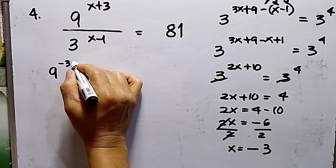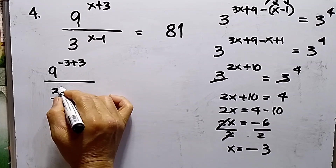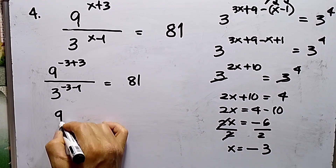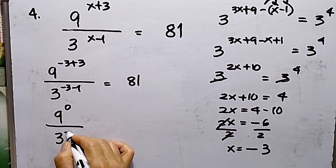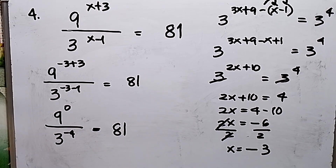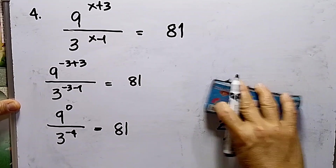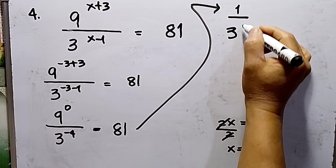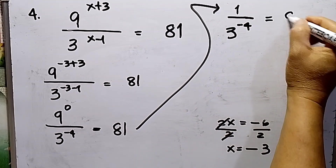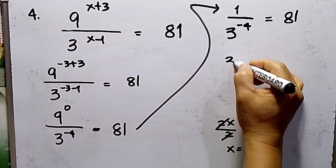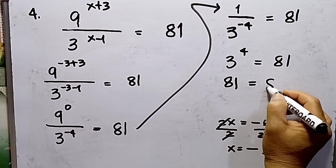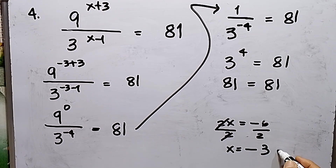Let us check by substituting x equals negative 3 into the given equation: 9 raised to the power of (negative 3 plus 3) divided by 3 raised to the power of (negative 3 minus 1) equals 81. Negative 3 plus 3 is 0, so the numerator is 9 raised to the 0. The denominator is 3 raised to the negative 4. Any number raised to the 0 equals 1, so the numerator becomes 1. Then, with 1 divided by 3 to the negative 4, by the laws of exponents, this becomes 3 to the 4th power, which equals 81. We know 3 raised to the 4th power is 81 equals 81. Therefore, the last number, x equals negative 3, is correct.